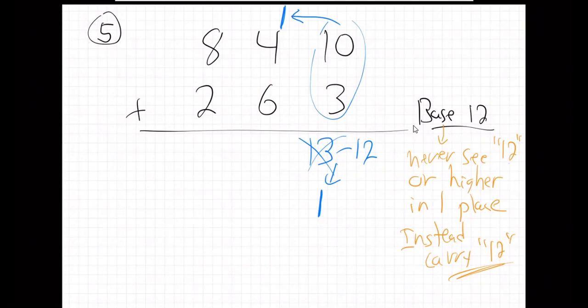Next column. So 1 and 10, basically, right? 6 and 4 is 10 and 1 is 11. So what am I going to do? Can I leave 11 in that spot?